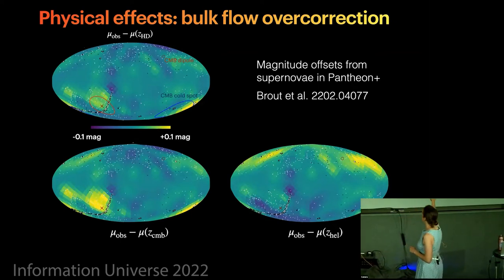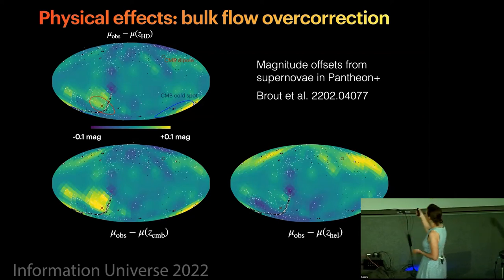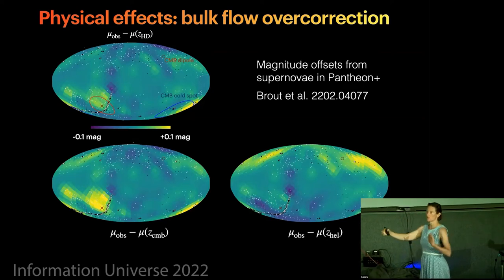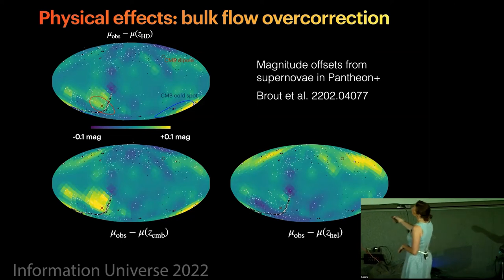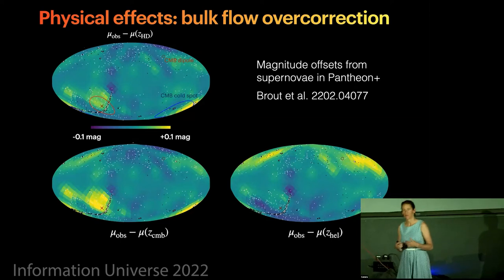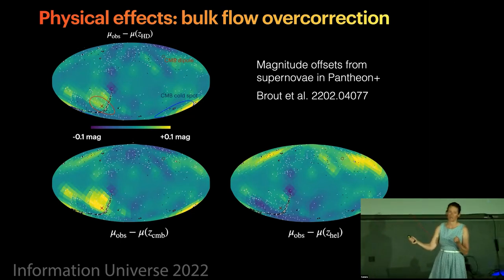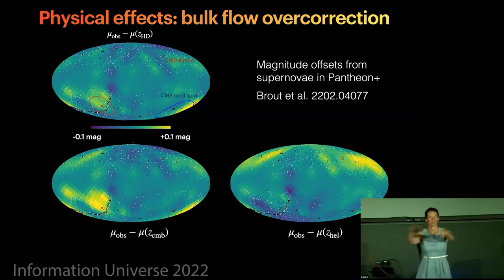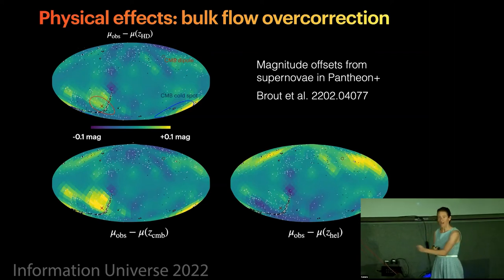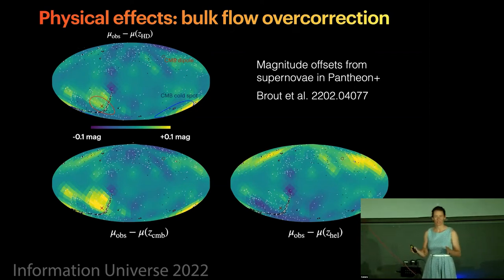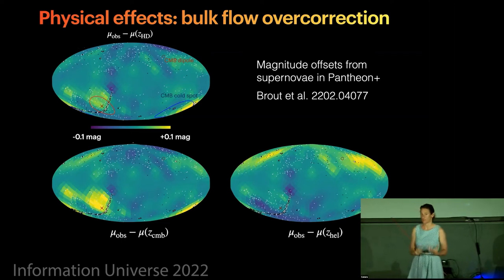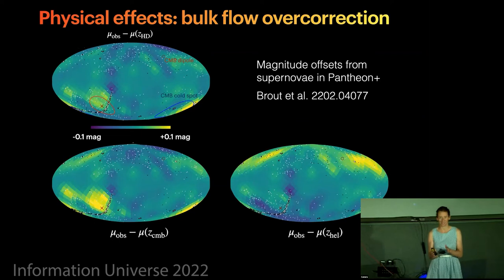And basically what happens when you subtract the CMB dipole is you actually overcorrect nearby galaxies. Because a lot of the nearby galaxies, we're all moving with respect to the CMB in the same way, because we're all attracted by the same great attractors and same mass densities in the universe. So if you subtract the CMB redshift from only our motion, it gives a false relative velocity with respect to nearby galaxies, because they're also moving with us. So we shouldn't have subtracted the redshift when we're talking with respect to nearby galaxies. Does that make sense?